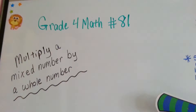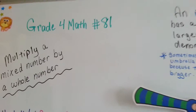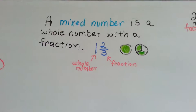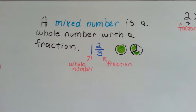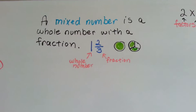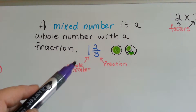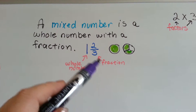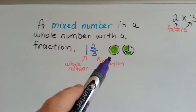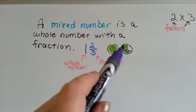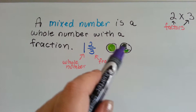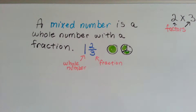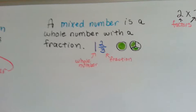Let's do a little review. A mixed number is a whole number with a fraction — like 1 and 2 thirds, which is the whole number 1 and the fraction 2 thirds. It represents 1, and then another part split into 3 that you've got 2 of.